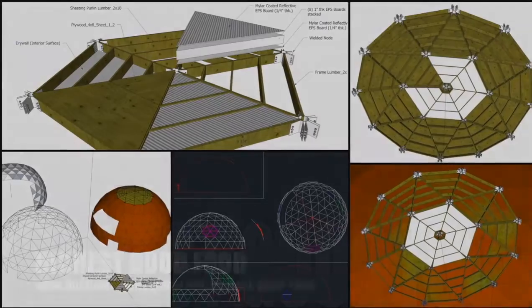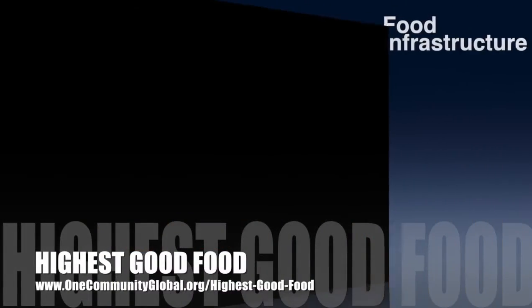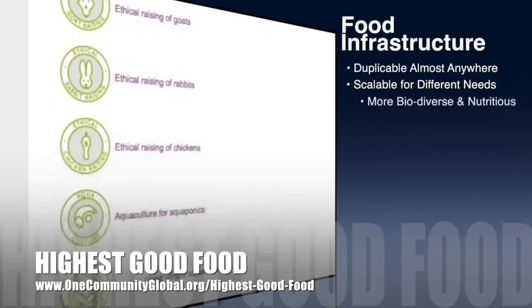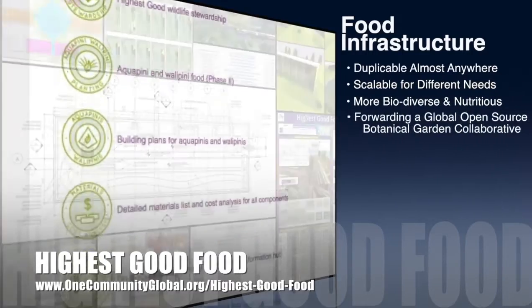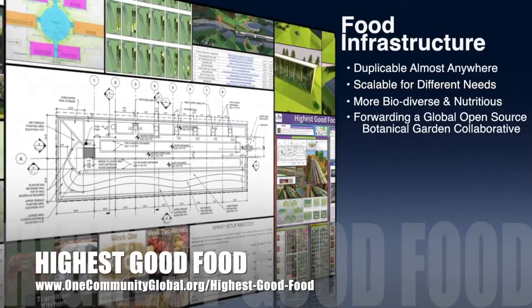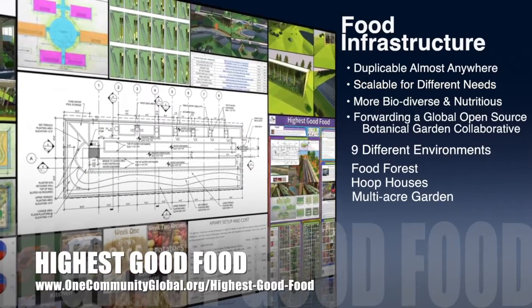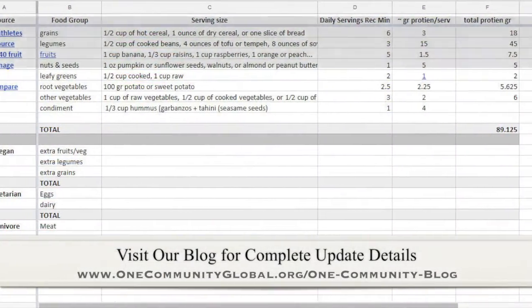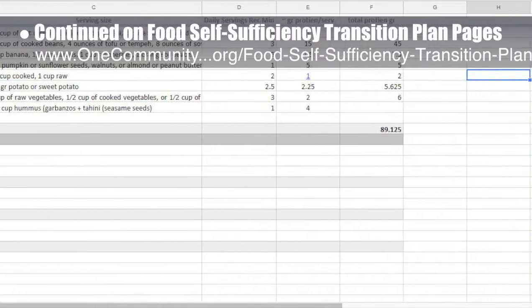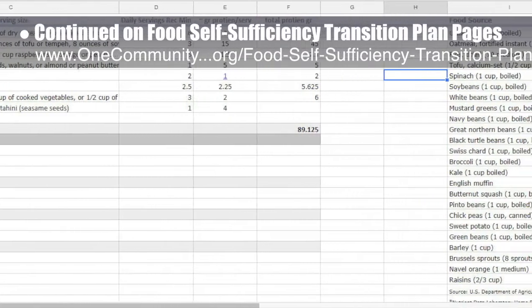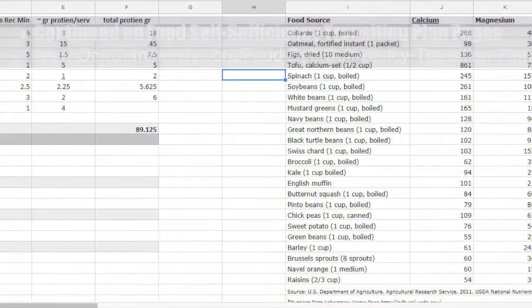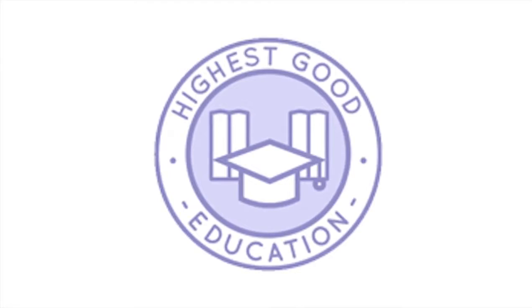One Community's approach to highest good food is duplicable almost anywhere, scalable for different needs, more biodiverse and nutritious, part of a global open source botanical garden collaborative, and includes nine different free shared and duplicable growing environments. This week the core team continued work on the formulas and data for the food calculations on the food self-sufficiency transition plan pages, bringing it to approximately 90% completion.